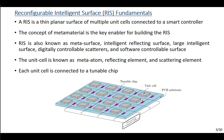Similarly, the unit cell is known as a meta atom, or more simply a reflecting element or scattering element. In order to allow reconfiguration of the RIS response towards the engaging radio wave in real time, each unit cell is connected to a tunable chip. This tunable chip can be, for example, a PIN diode, a varactor, a MEMS switch, or a mixture of some sheet electronic circuit.